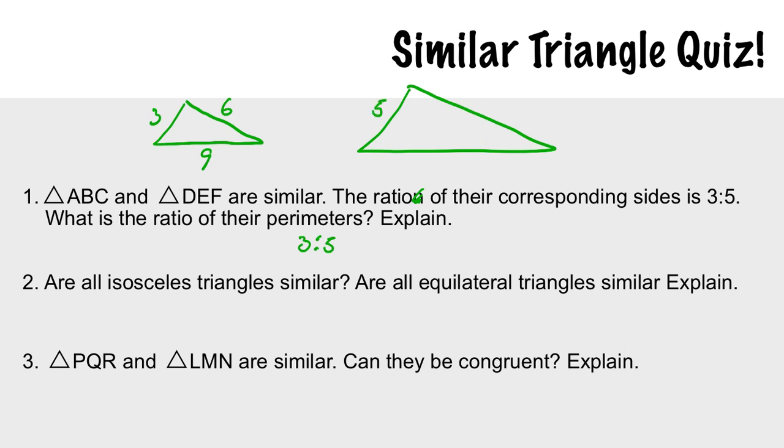So 18 compared to 30, when you reduce it, becomes 3 compared to 5. So the ratio of the perimeters is the same.